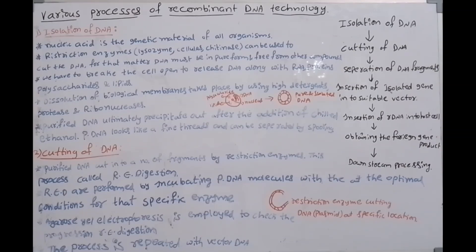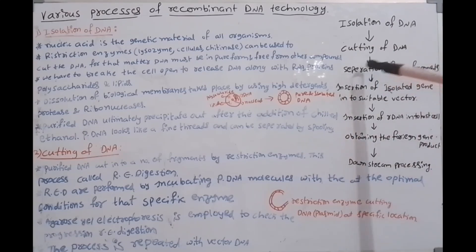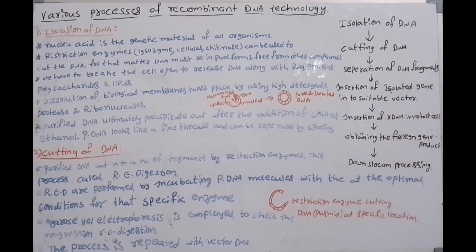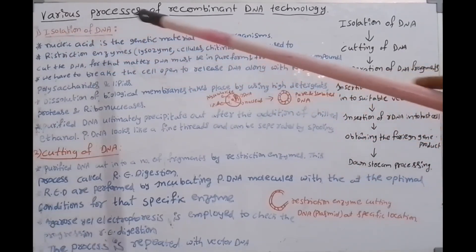The steps in recombinant DNA technology are: isolation of DNA, cutting of DNA, separation of DNA fragments, insertion of the isolated gene into a suitable vector, insertion of rDNA into the host cell, obtaining the foreign gene product, and downstream processing.